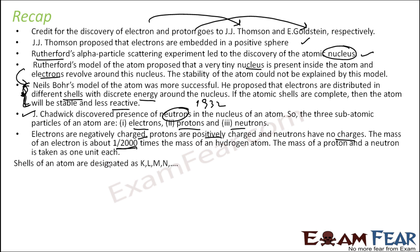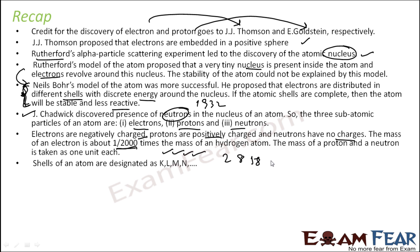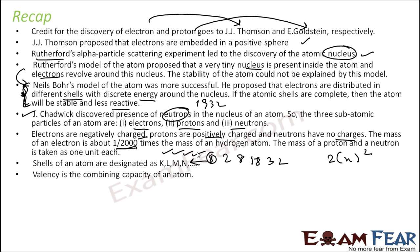As per the Niels Bohr model, shells are designated as K, L, M, N. K can have at the max 2 electrons, L can have at the max 8 electrons, M can have 18 electrons, N can have 32 electrons — the formula being 2n². At the outermost shell, there can be at the max 8 electrons.